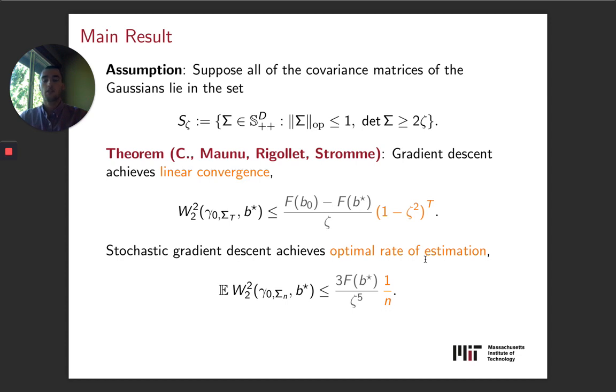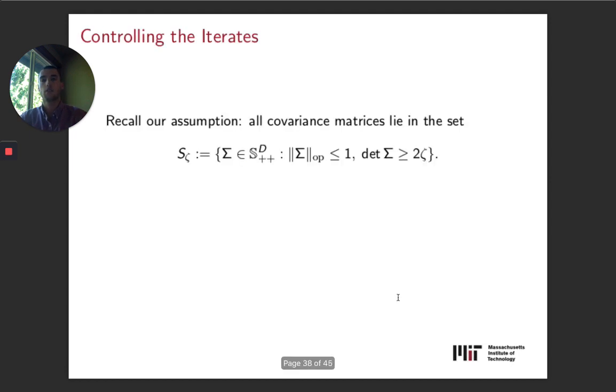In specific, our main result is as follows. We assume that all the covariance matrices of the Gaussians lie in the set S_zeta, where it's the set of all things with operator norm no more than one and determinant at least 2*zeta. And what we get is, in this case, gradient descent will converge linearly. So we're going to get (1-zeta^2)^t. And that stochastic gradient descent achieves basically the optimal rate of estimation, parametric rate 1/n. Unfortunately, we do have a large zeta^{-5} factor here.